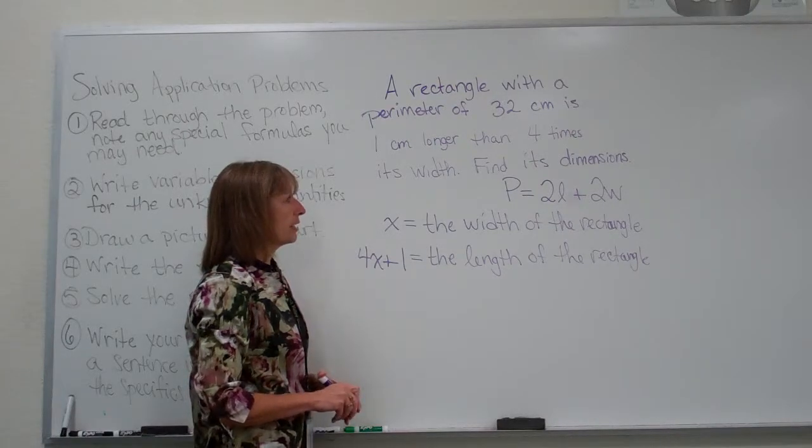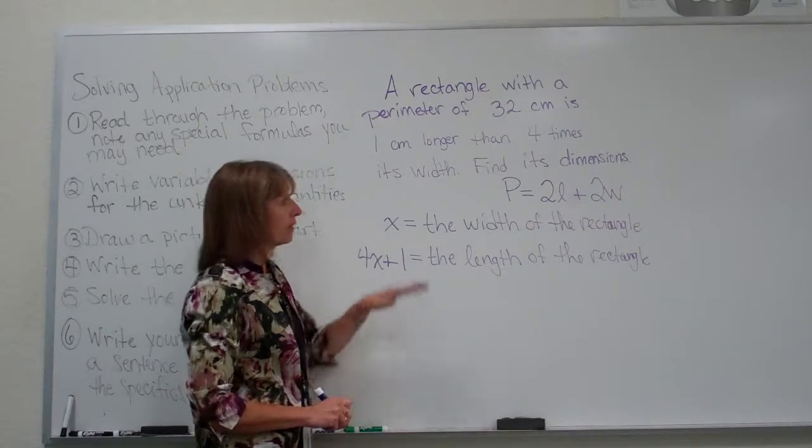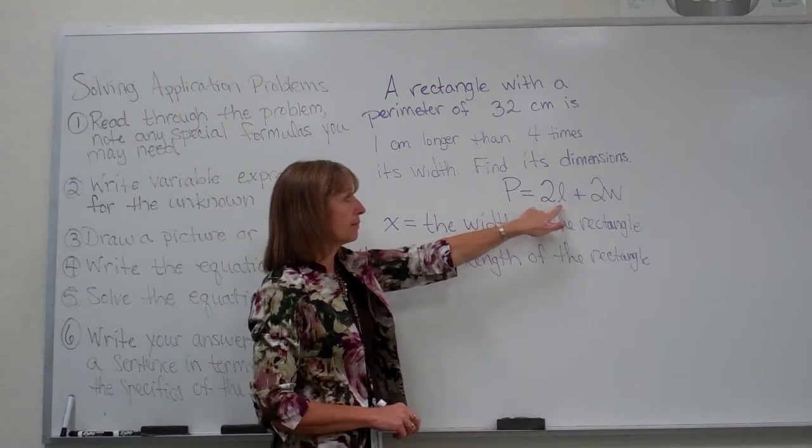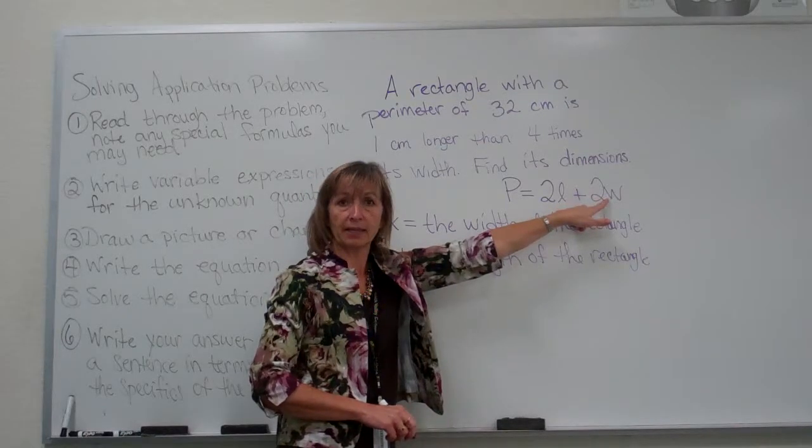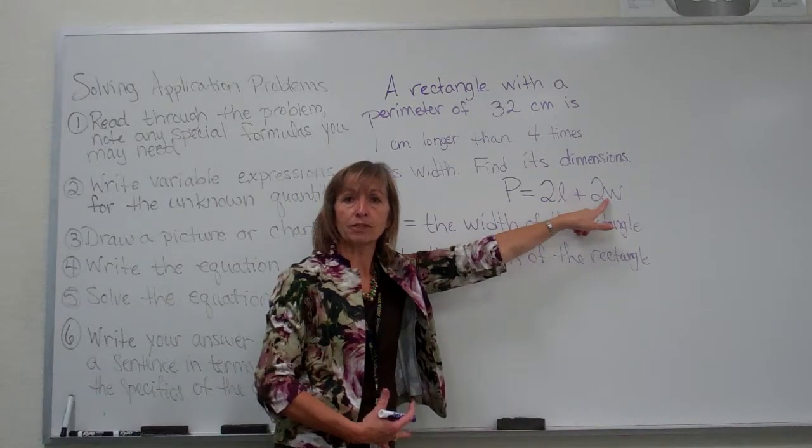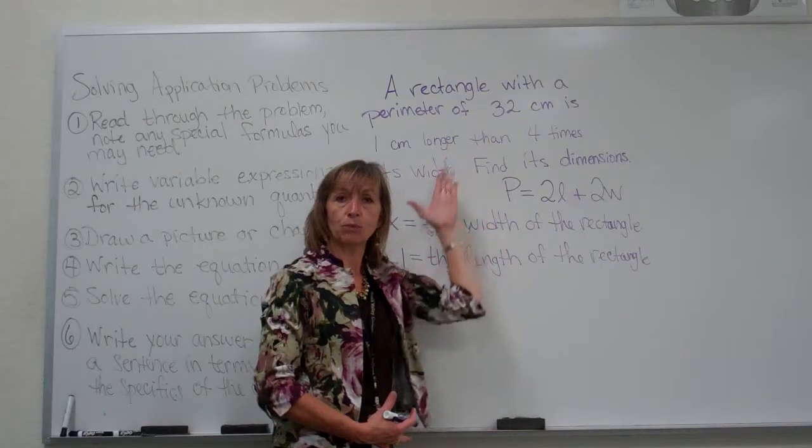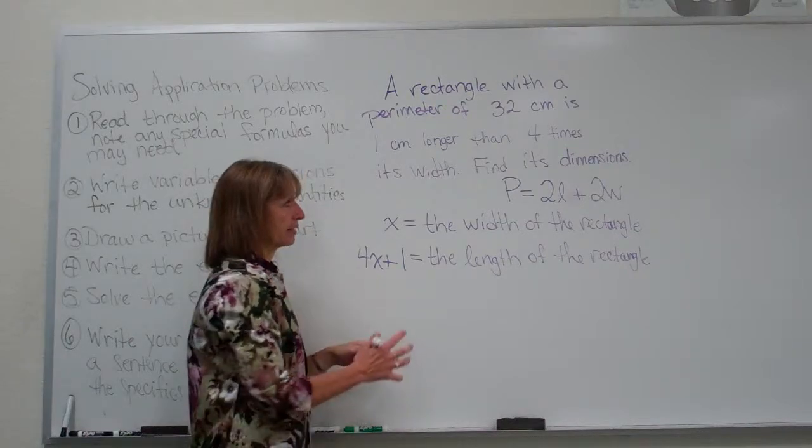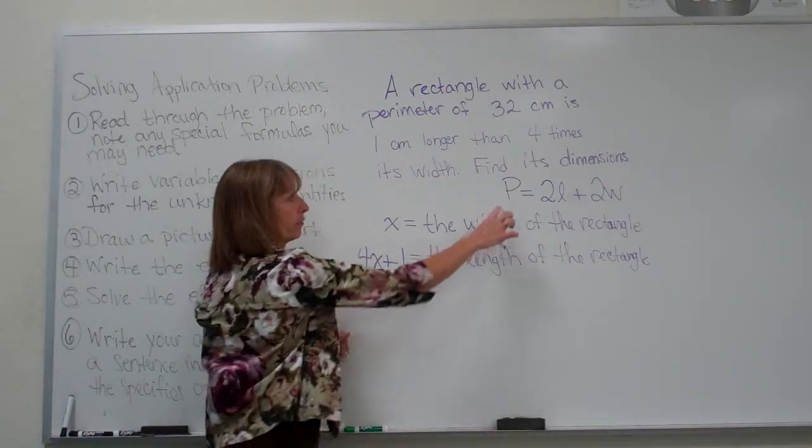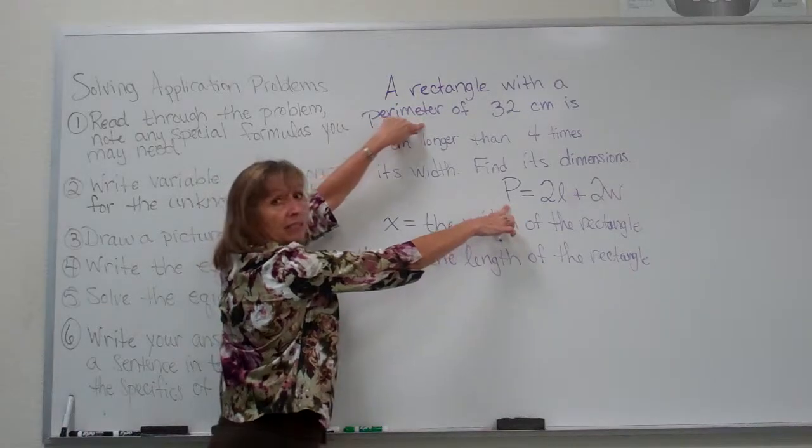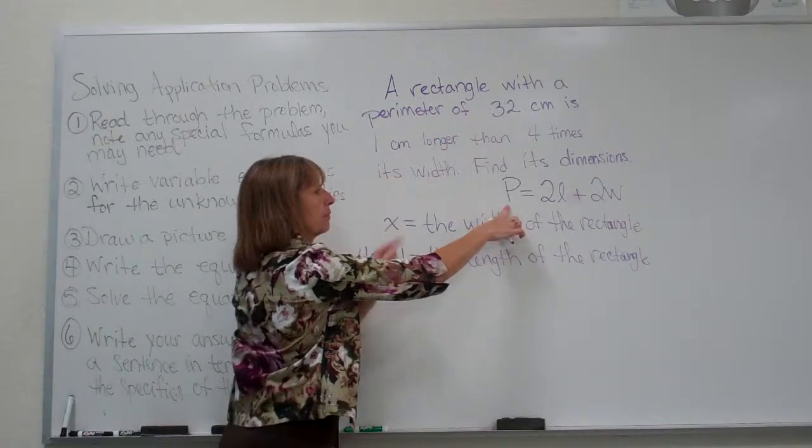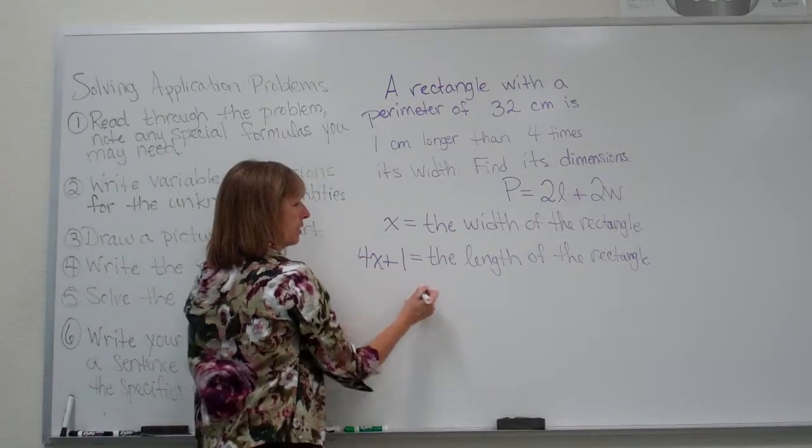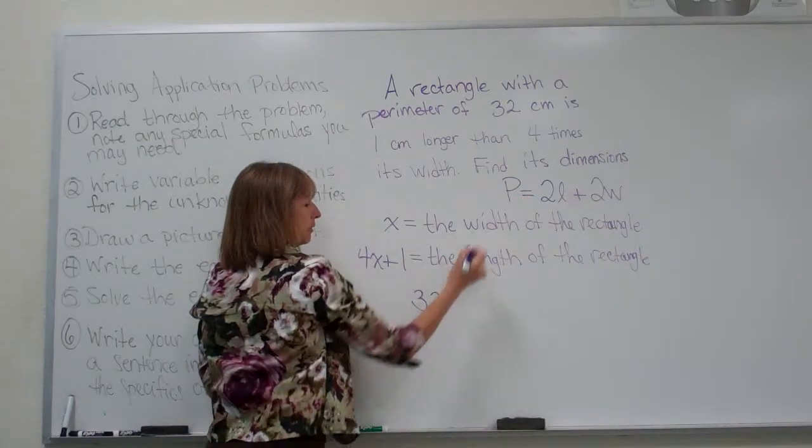So next up what I want to do is to write my equation. Now I know I'm going to use this formula that the perimeter of a rectangle is equal to two times the length plus two times the width. But I'm going to pull the specifics of the information out of the application as well as my variables that I've had as my expressions to represent things. So on the left-hand side of my formula is p for perimeter. And they told me in the problem that the perimeter is 32 centimeters. So I'm going to write that, take out the p, and replace it with 32. And then put my equals down.